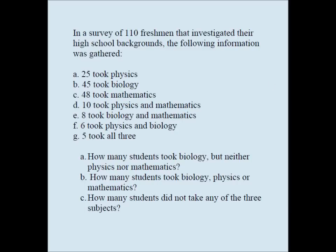Let's solve a classic Venn diagram problem. In a survey of 110 freshmen that investigated their high school backgrounds, the following information was gathered: 25 took physics, 45 took biology, 48 took mathematics.